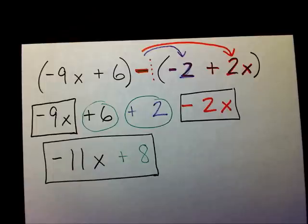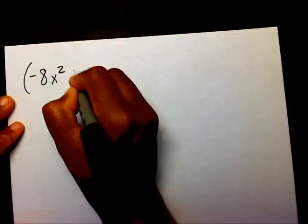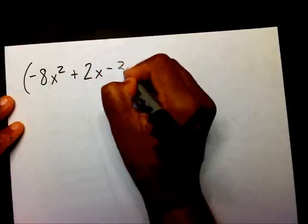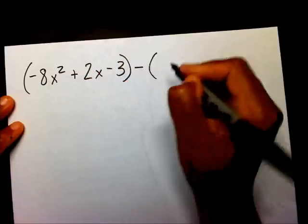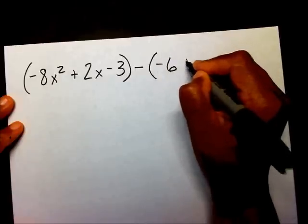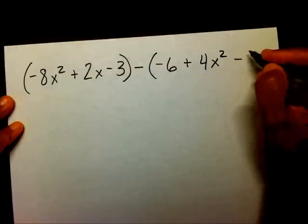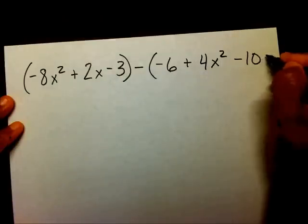Let's try another one. I have negative 8x squared plus 2x minus 3 minus negative 6 plus 4x squared minus 10x.